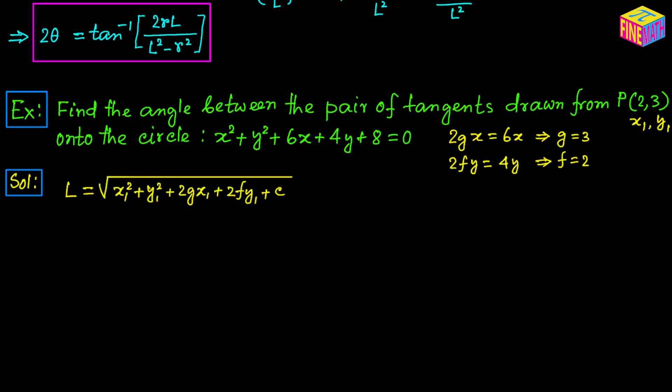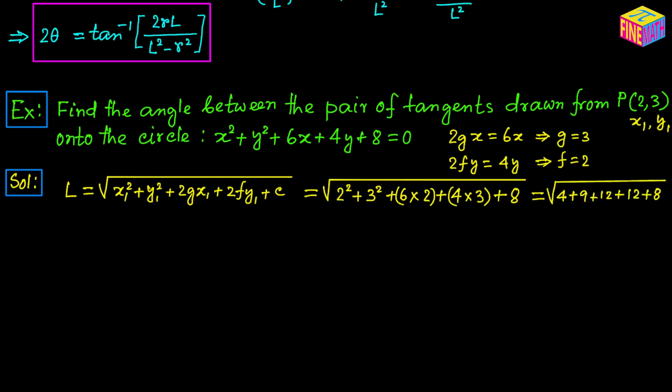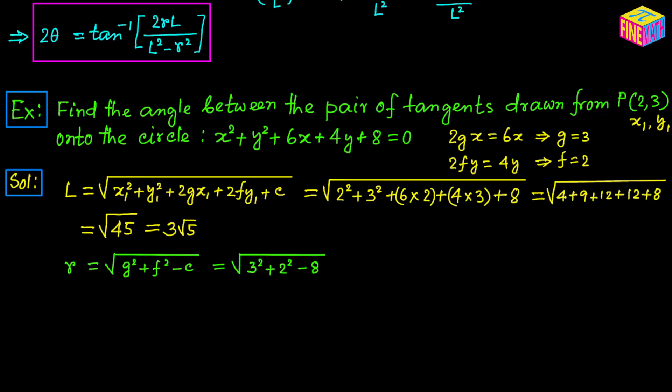Now let's calculate the length of the tangent. Using the formula, L equals square root of 2² plus 3² plus 6 times 2 plus 4 times 3 plus 8, which equals square root of 4 plus 9 plus 12 plus 12 plus 8 equals square root of 45 equals 3 root 5. For the radius: R equals square root of G² plus F² minus C equals square root of 9 plus 4 minus 8 equals square root of 5.